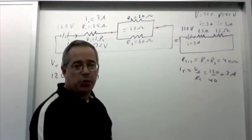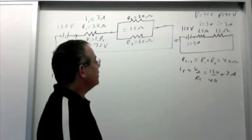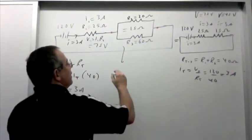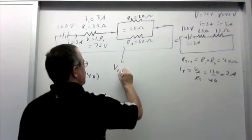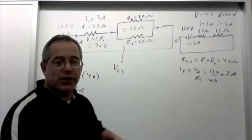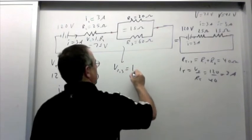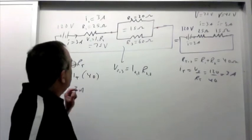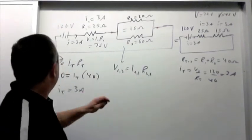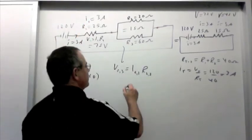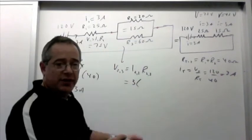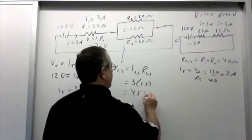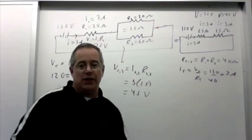The voltage between the red dots is 45 volts. I'm going to do that calculation again. I'm going to call this V2,3, pretending this is one resistor. That's equal to I2,3 R2,3. We know the total current is 3 amps. We know the total resistance of that parallel section is 15 volts. So the voltage between the red dots is 45 volts.